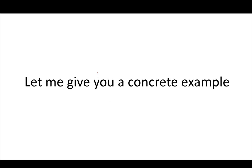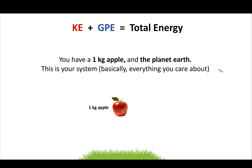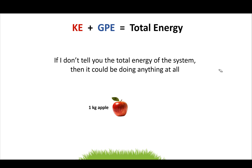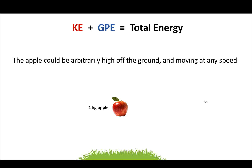Let me give you a concrete example. Say you have a one-kilogram apple and planet Earth — this is your system. The Earth and the apple are interacting through gravity specifically. If I don't tell you the total energy of the system, the apple could be arbitrarily high off the ground and moving at any speed — four million miles above Earth moving at two miles per hour, or really close and moving at six billion miles per hour. Without knowing the energy, kinetic and gravitational potential energy are unrelated.